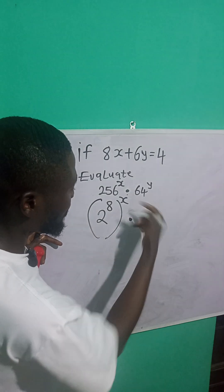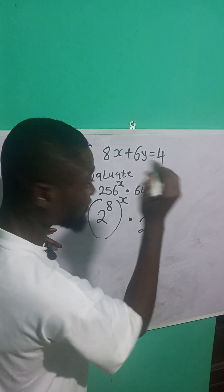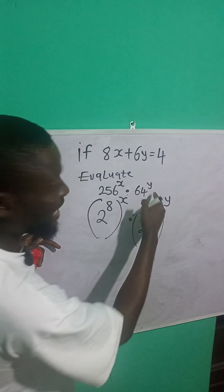Multiplied by what? 64 is the same as what? 2 raised to power 6, right? All raised to power of what? y.